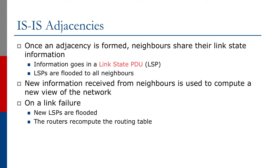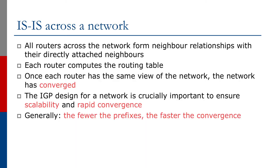New information received from neighbors is used to compute a new view of the network. When a link fails, new LSPs are flooded and the routers recompute the routing table. IS-IS operating across a network — all routers form neighbor relationships with their directly attached neighbors, and each router computes the routing table. Once each router has the same view of the network, the network has converged. The IGP design for a network is crucially important to ensure scalability and rapid convergence. The general rule: the fewer the prefixes, the faster the convergence. Network operators pay close attention to the IGP design to minimize the number of prefixes so they get the fastest possible convergence.